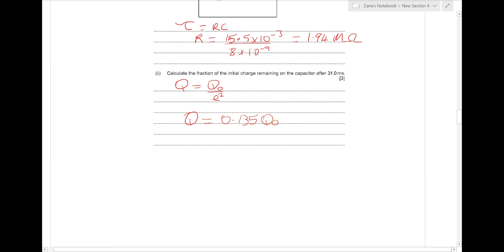If we do 1 over E squared, we basically get 0.135. And that will be the answer to the question. We can give it as 0.135 or 13.5%.